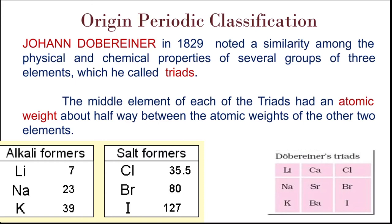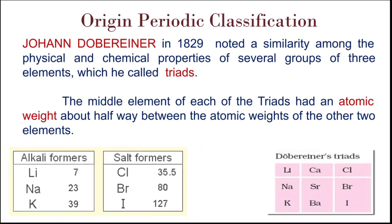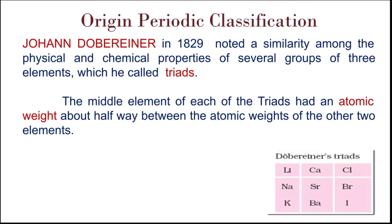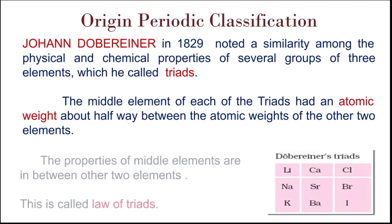Simply put, the average of the first and last element gives the atomic mass of the middle element. You can see here there are three triads given: lithium-sodium-potassium, calcium-strontium-barium, and chlorine-bromine-iodine. The properties of the middle elements are in between the other two elements. This is called the law of triads. A triad consists of three elements, and if you take the average of the atomic masses of the first and last one, you get the atomic mass of the middle element.